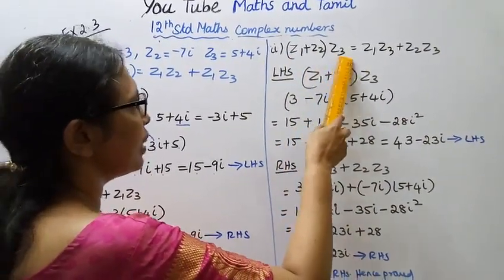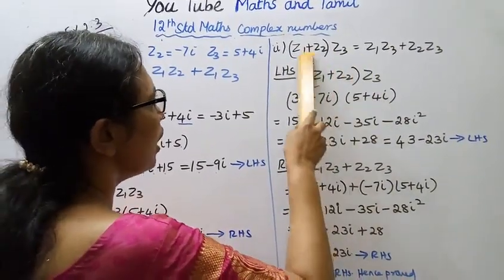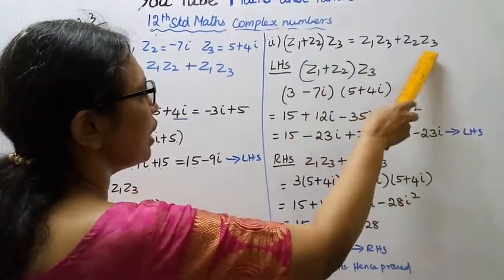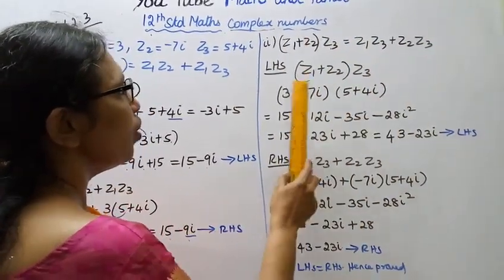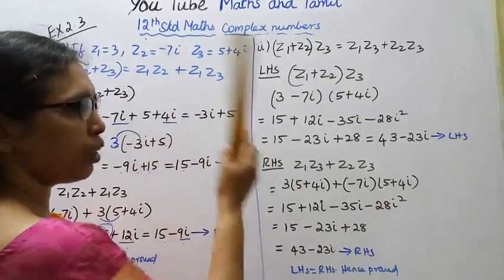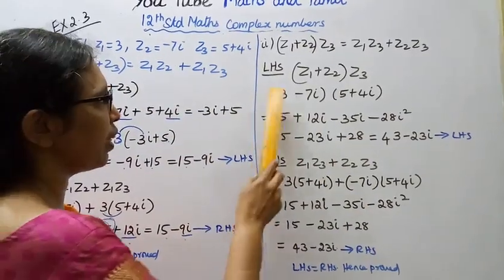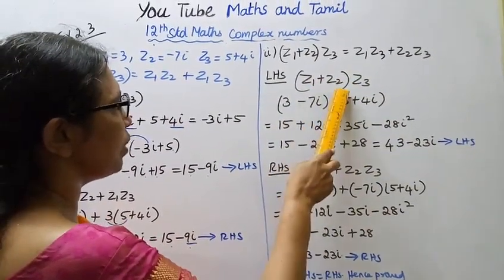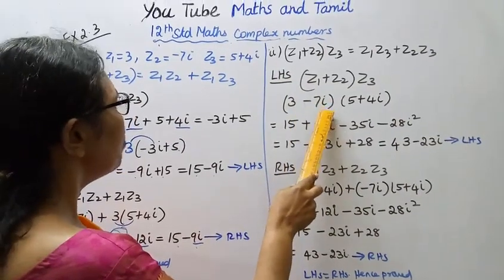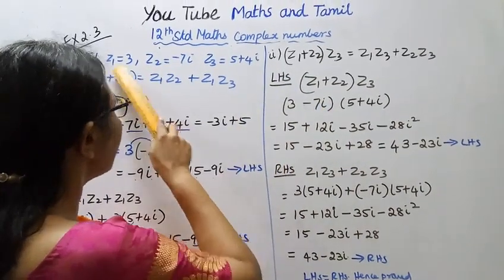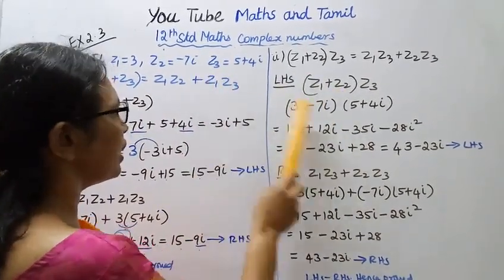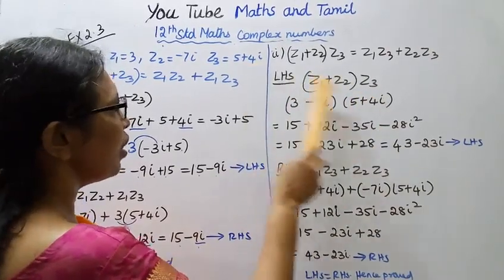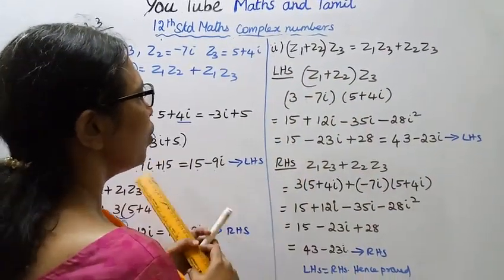Second subdivision: Z1 plus Z2 bracket Z3 equal to Z1 Z3 plus Z2 Z3. With the same values substituted: Z1 plus Z2 in bracket is 3 plus minus 7i, that is 3 minus 7i, multiplied by Z3 which is 5 plus 4i.